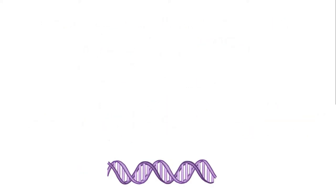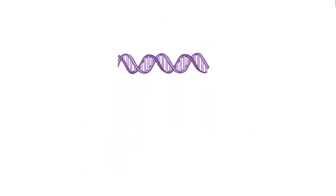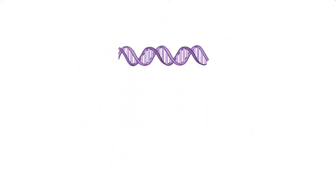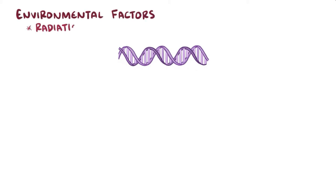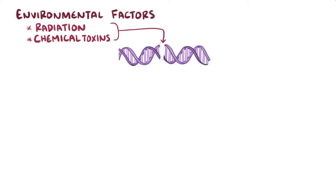The DNA of every cell gets damaged over and over again from various environmental factors like radiation and chemical toxins. One of the most severe types of DNA damage is a double-stranded break,